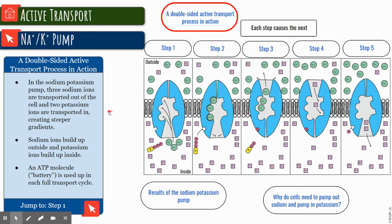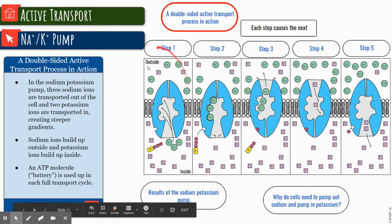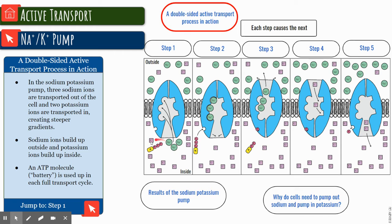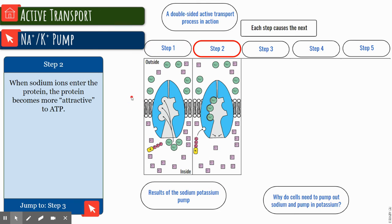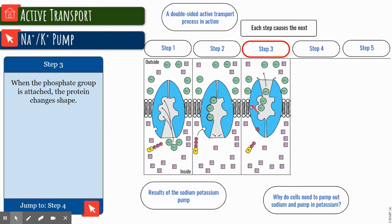The sodium ions build up outside and we're going to need our battery, our ATP battery again, to fully transport this cycle. Step one: sodium ions enter the protein. The protein suddenly becomes more attractive to ATP, so this draws in the ATP. In step three, we have the release of the phosphate group which causes the shape change.